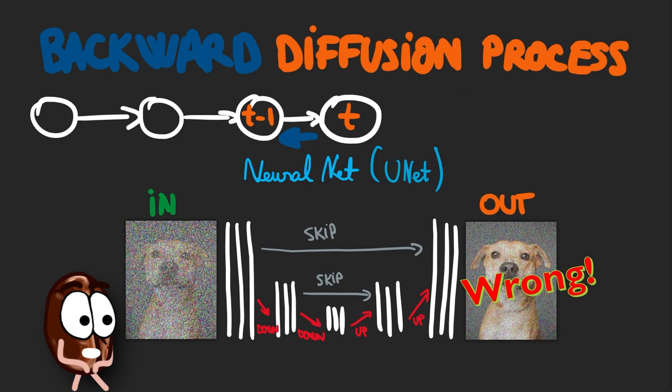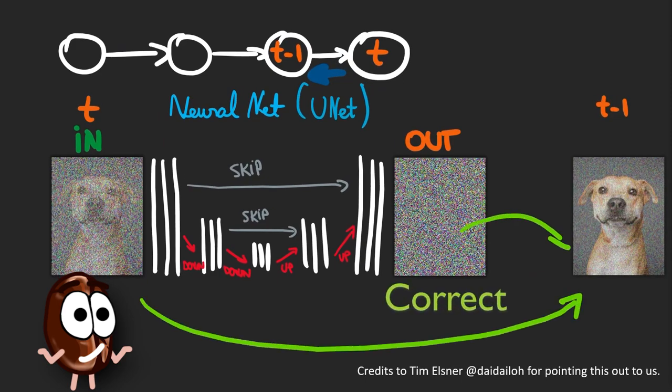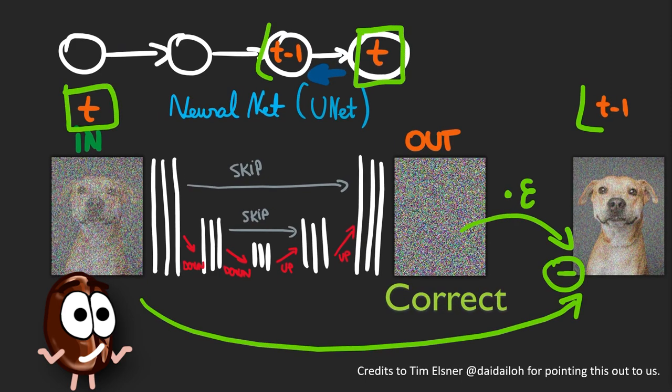So this was basically a corrigendum to our previous videos, where we thought that at each step the model predicts only a fraction of the noise. But actually, the diffusion model predicts the total amount of noise, from which we then subtract only a fraction of it to give it afterwards yet another go at denoising.